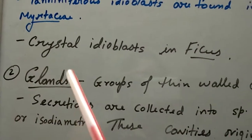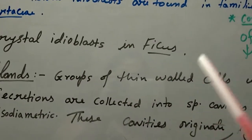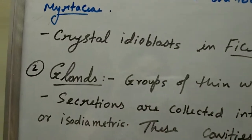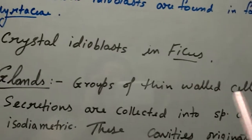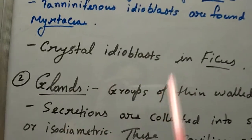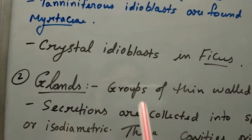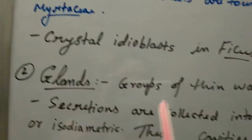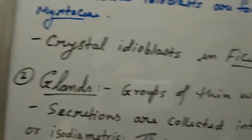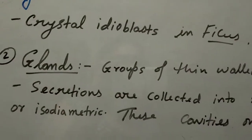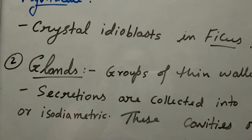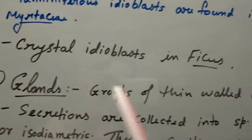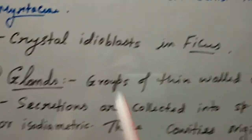Crystal idioblasts are found in Ficus. These are stony structures found in Ficus, basically meant for mechanical support but also meant to release some secretory juices or secretory extracts. They are commonly found in Ficus.